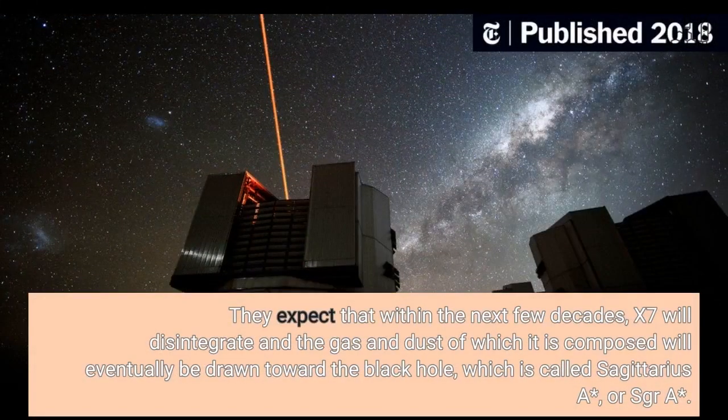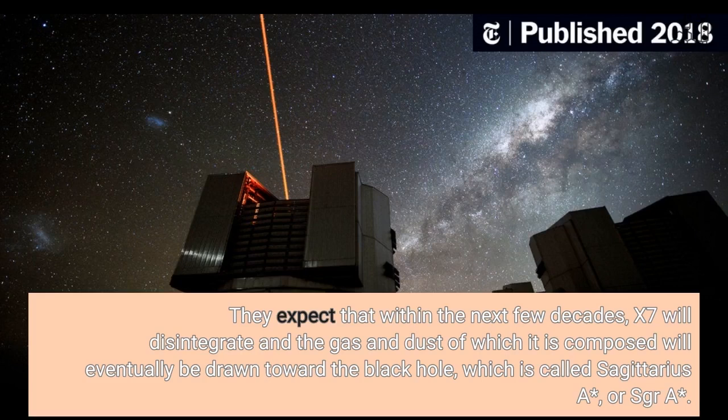They expect that within the next few decades, X-7 will disintegrate and the gas and dust of which it is composed will eventually be drawn toward the black hole, which is called Sagittarius A asterisk, or SGR A star.